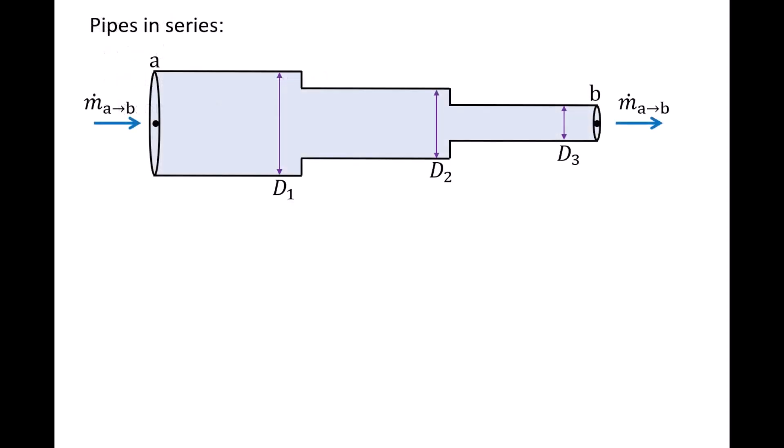We first examine pipes in series. Here we have three pipes with three different diameters, D1, D2, and D3. The flow enters at point A on the left and exits at point B on the right. Since the flow is steady through the pipes, the mass flow rate from A to B, denoted as M dot AB, is the same throughout the three pipes.